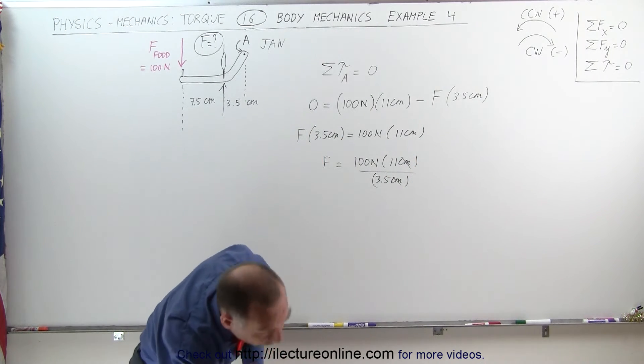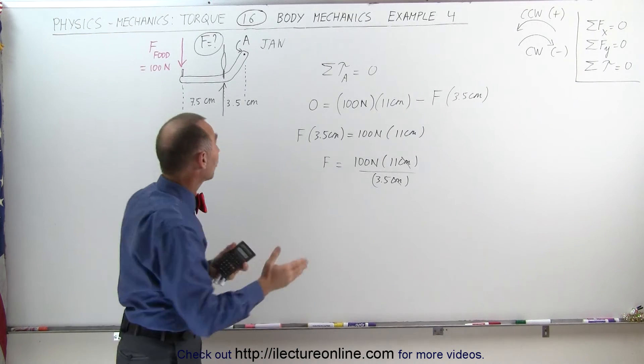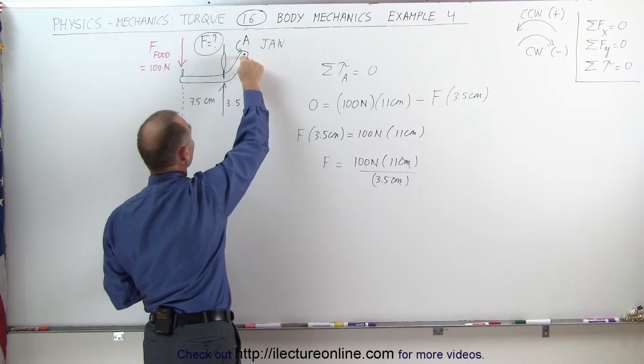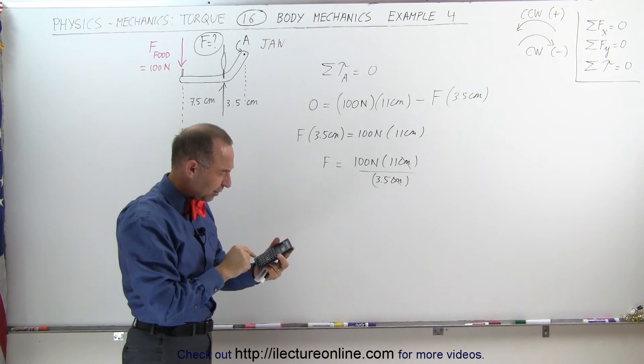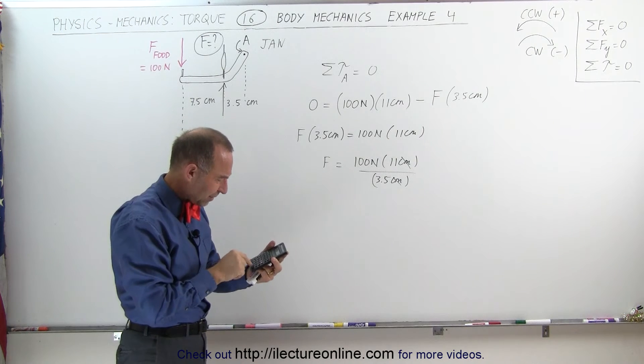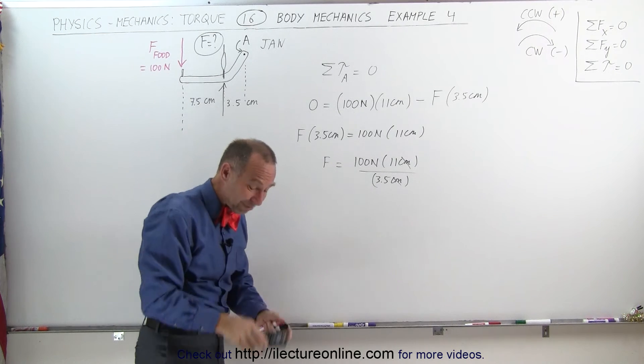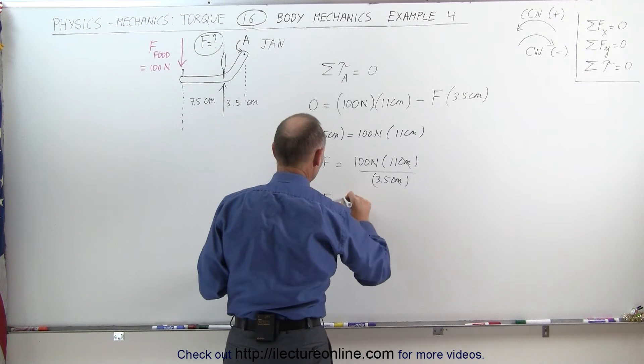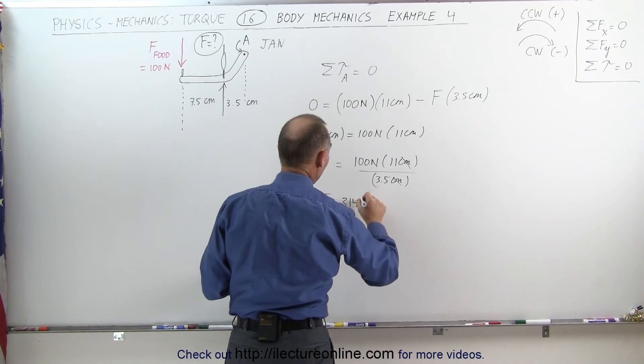It simply becomes a ratio then, between the distance from the hinge here to the muscle and from the hinge to the front teeth. So 100 times 11 divided by 3.5 equals, and that would be 314 newtons of strength, or force, that that muscle needs to apply.